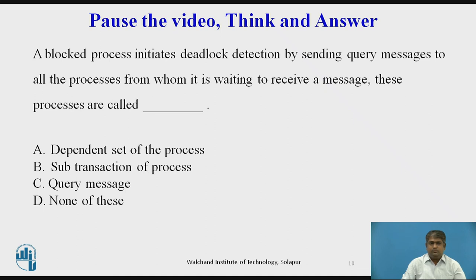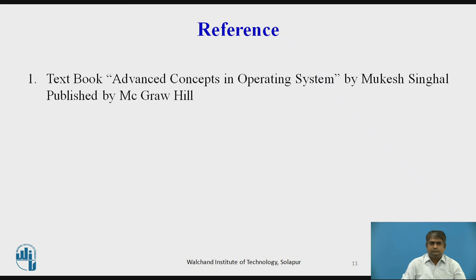A blocked process initiates deadlock detection by sending query messages to all the processes from whom it is waiting to receive a message. These processes are called the dependent set of the process. Here is the reference.